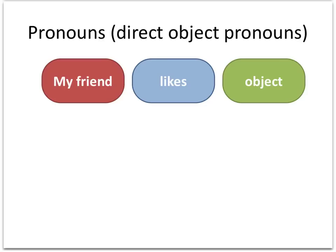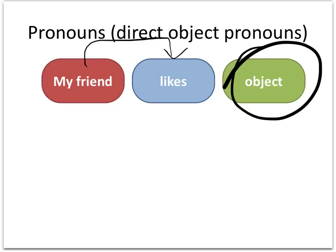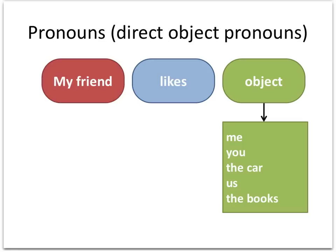Now let's talk about the object of the sentence. We've got an open object slot: 'my friend likes ___.' We've got a doer of the action — that's our subject — and our action is 'likes,' and then our object is the affected party. Whatever is being liked did not choose to be liked; it just is liked, therefore it is affected. Here are some examples: my friend likes me, my friend likes you, my friend likes the car, my friend likes us, my friend likes the books. Whatever you want to put in the object, you really can put in the object — whatever your friend might like.